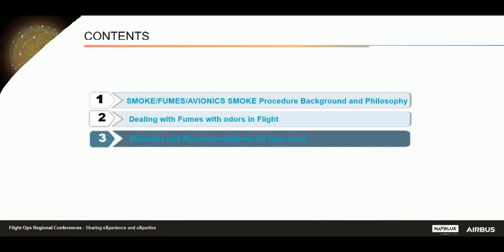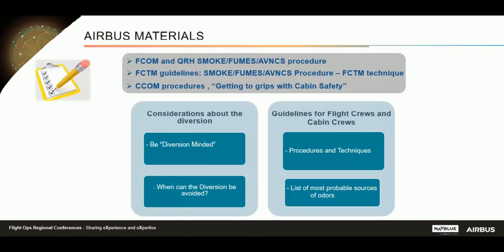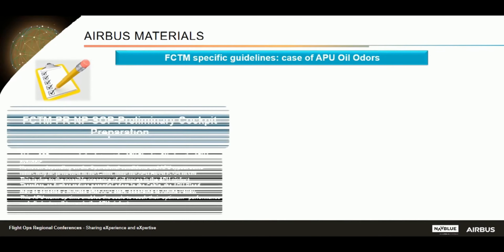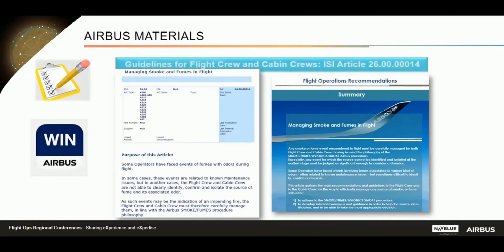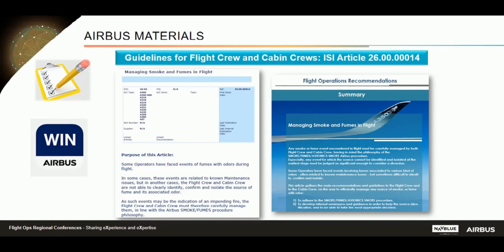All operational recommendations and techniques can be found in the FCOM, QRH, FCTM, CCOM, and the Getting to Grips with Cabin Safety brochure. In the FCTM in particular, you will now find the list of the most probable sources of odors. For specific recurrent issues such as APU oil odors, alternative means have been provided to mitigate the potential for odors, including during preliminary cockpit preparations and the parking phase. Additionally, an ISI article on how to manage smoke and fumes with odors in flight has been released and is available on the Airbus World Portal and the WIN platform.